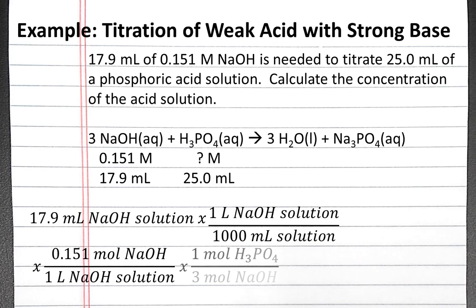The next step is to use stoichiometry to convert from moles of sodium hydroxide into moles of phosphoric acid. If you put this into your calculator, you should get 9.01 times 10 to the negative fourth moles of phosphoric acid.